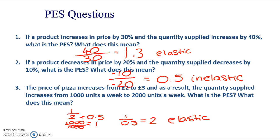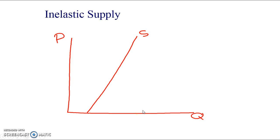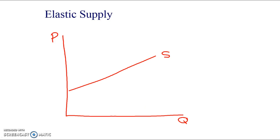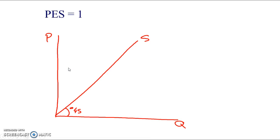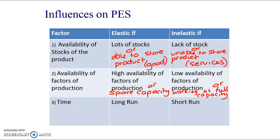That's what your 4-mark question would typically look like — usually they give you one of the percentage changes so you don't need to work everything out. In terms of graphs: inelastic supply is quite steep but still slopes upward; perfectly inelastic supply is a vertical line. Elastic supply slopes upward more gently; perfectly elastic supply is a horizontal line. Unitary supply passes through the point of origin at a 45-degree angle. The three main influences on PES are: availability of stocks, availability of factors of production, and time.